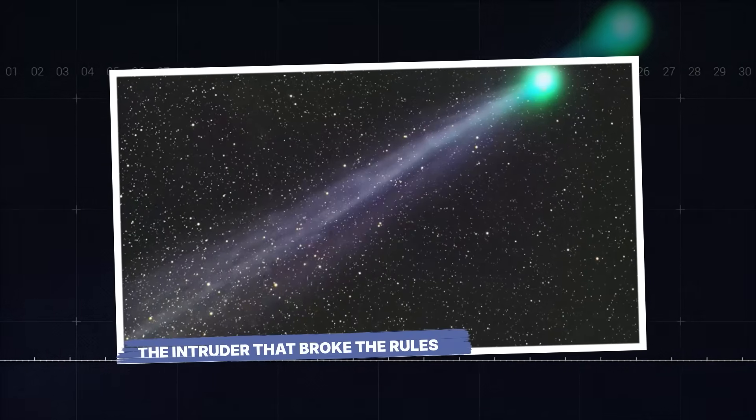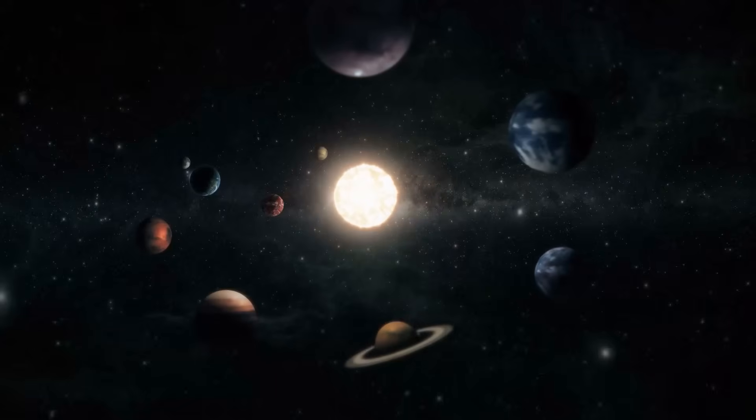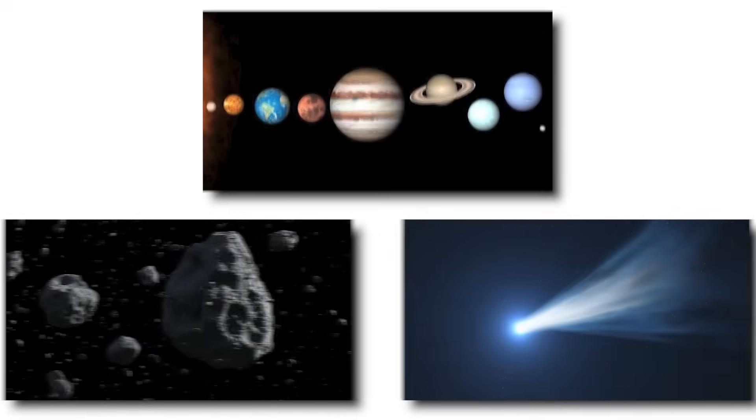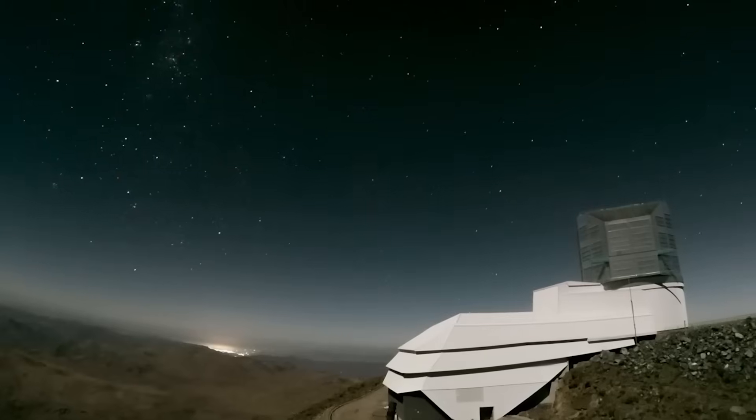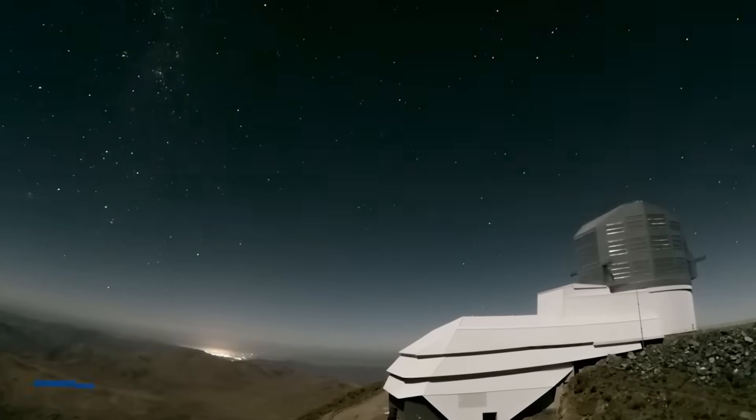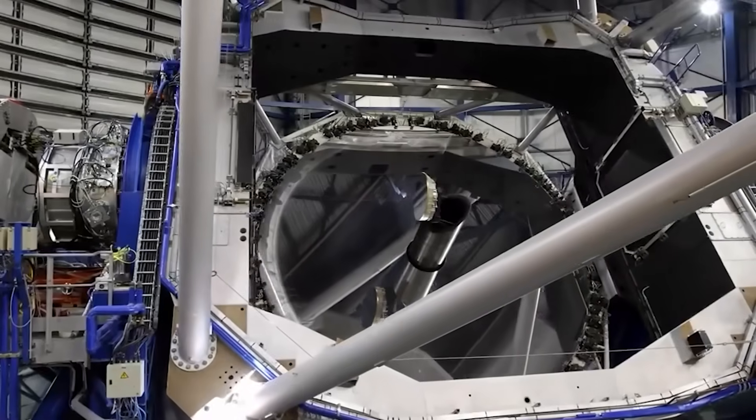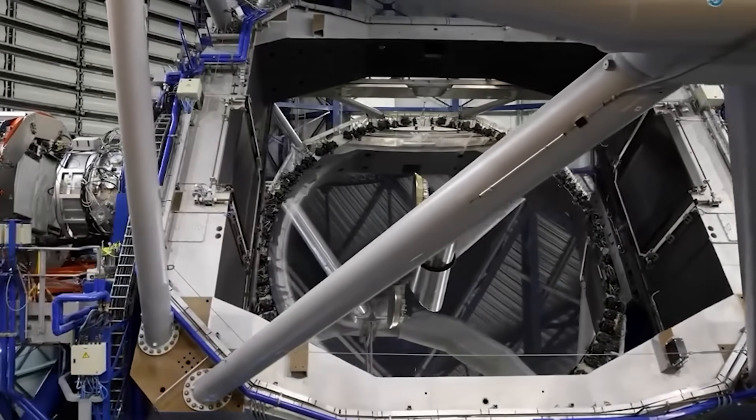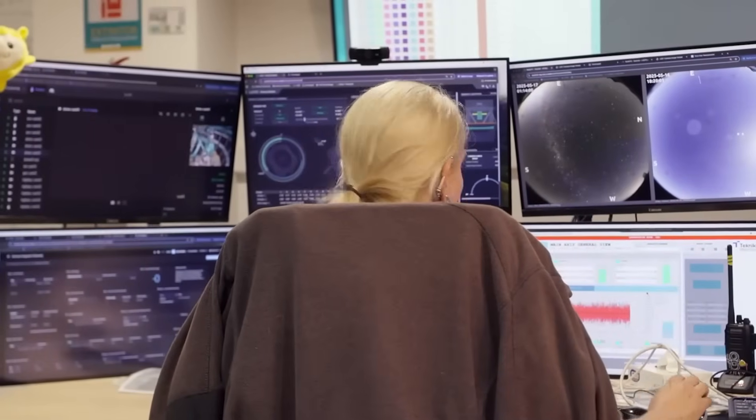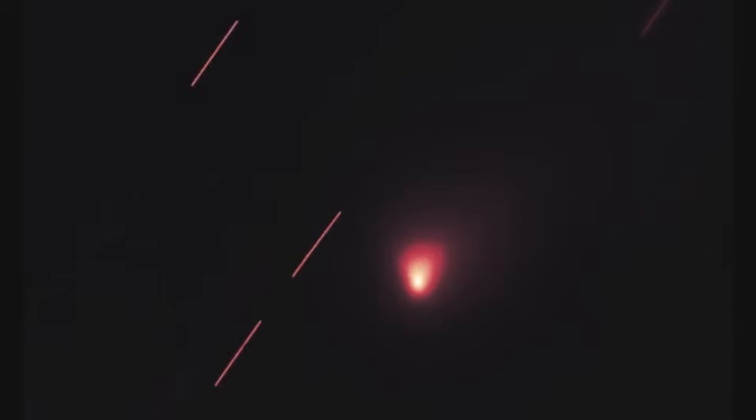The intruder that broke the rules. Our solar system is a busy place, a cosmic neighborhood filled with planets, asteroids, and comets we've known for centuries. But in the summer of 2025, something new arrived, something that didn't belong. It was first spotted by the Atlas Survey Telescope in Chile, a system designed to be our planet's early warning system for dangerous asteroids. And to put it mildly, the first readings were baffling.